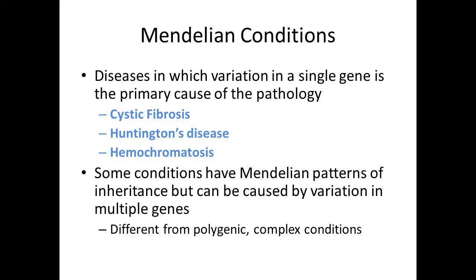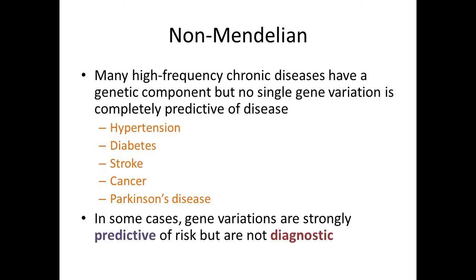Some conditions have Mendelian patterns of inheritance, but can be caused by variation in multiple genes. Non-Mendelian conditions include many high-frequency chronic diseases that have a genetic component, but no single gene variation is completely predictable. Well-known examples of non-Mendelian conditions include hypertension, diabetes, risk of stroke, risk of cancer, and Parkinson's disease.